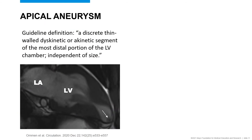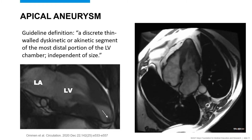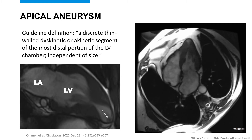With regards to apical aneurysm, the guideline definition is a discrete thin-walled dyskinetic or akinetic segment at the most distal portion of the LV chamber, independent of size. These thin-walled apical segments can be nidi for ventricular arrhythmia formation and, as shown on a two-chamber cardiac MRI still frame, can be a focus for development of apical thrombosis. Sometimes they can be subtle — here's a four-chamber steady-state free precession cardiac MR sequence showing a small apical aneurysm right at the tip, which was actually missed on transthoracic echocardiogram.